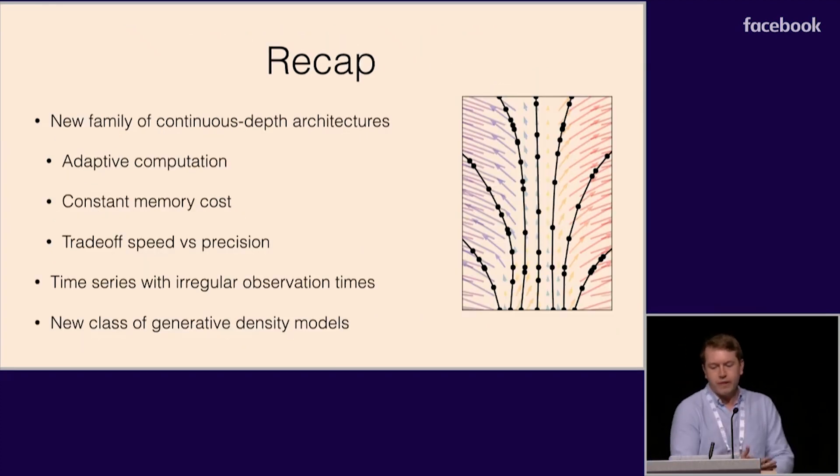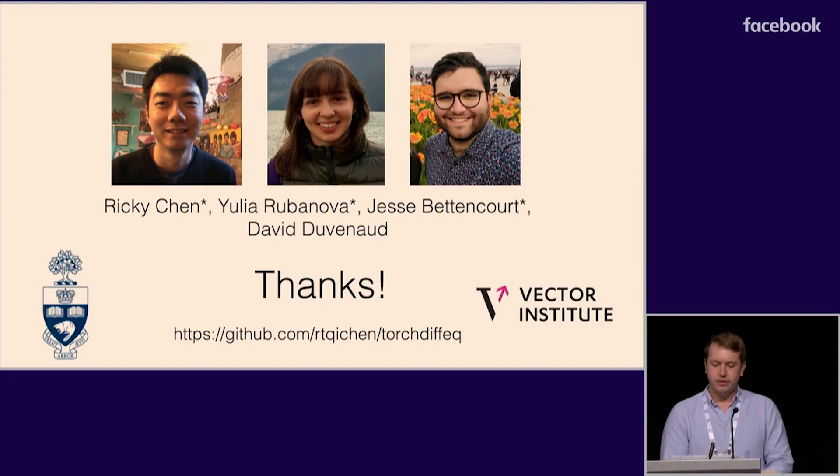To summarize, we introduced a new family of neural network architectures that have continuous depth. These networks adaptively compute their output, can be trained with constant memory costs, and let the user trade speed for precision in a fine-grained way. We showed how to build time series models that can handle arbitrary measurement times, and finally, we derived a new class of efficiently invertible generative density models. I'd like to thank my students Ricky Chen, Yulia Rubanova, and Jesse Bettencourt. Thank you.